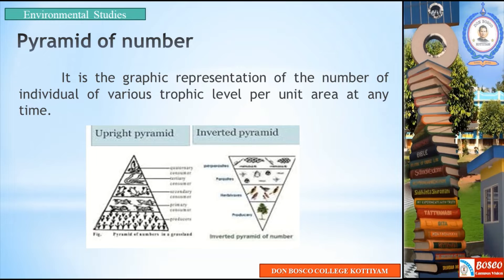The upright pyramid is the pyramid of a normal grassland area — it represents a grassland food chain.